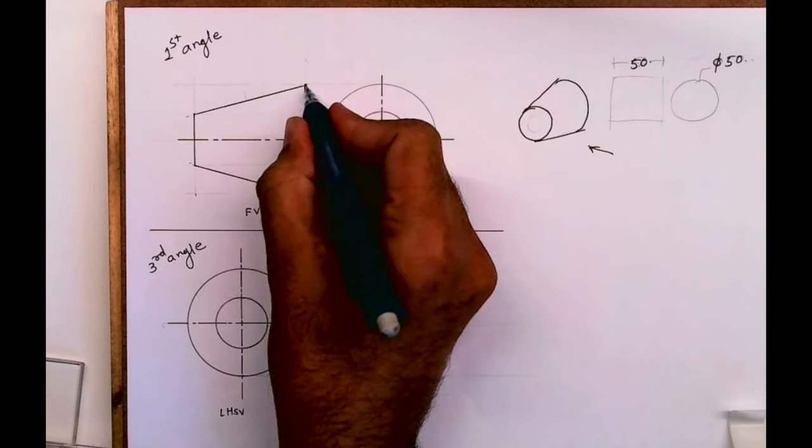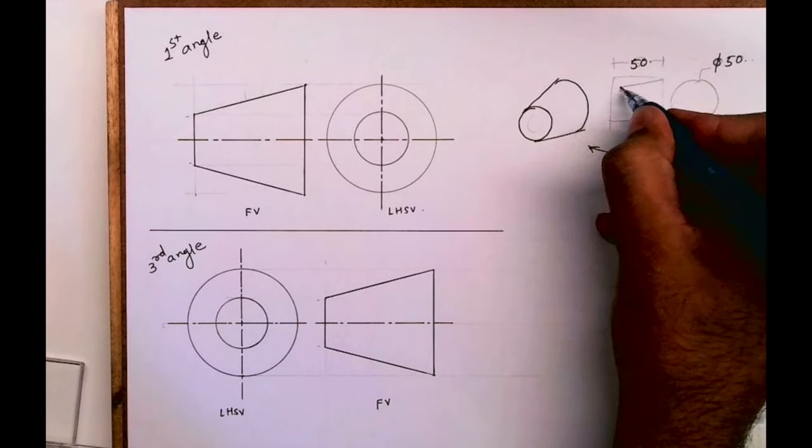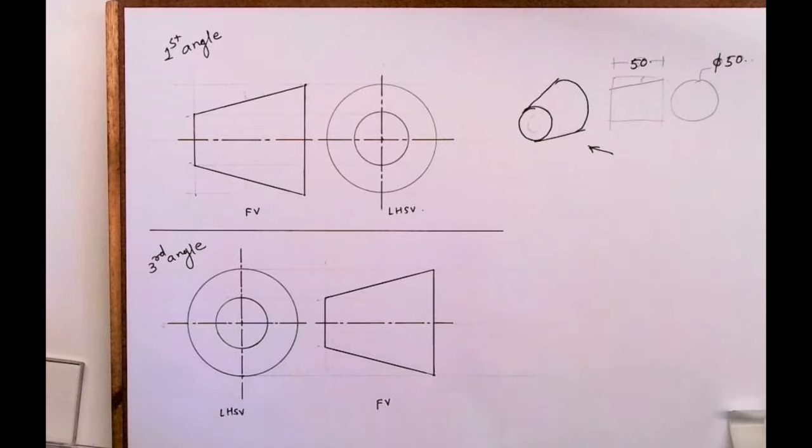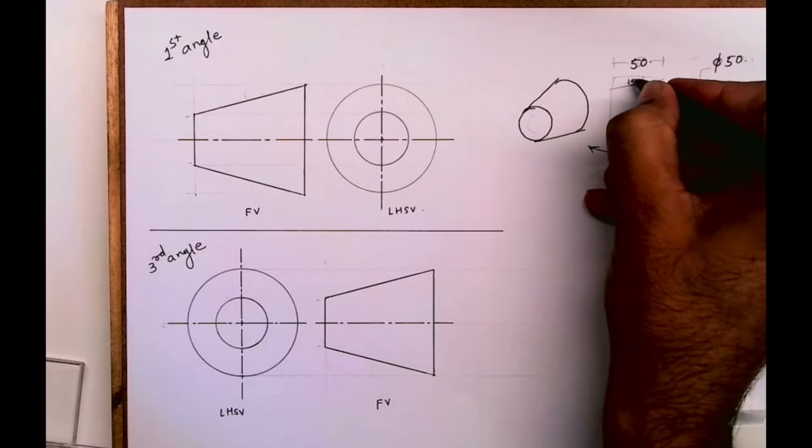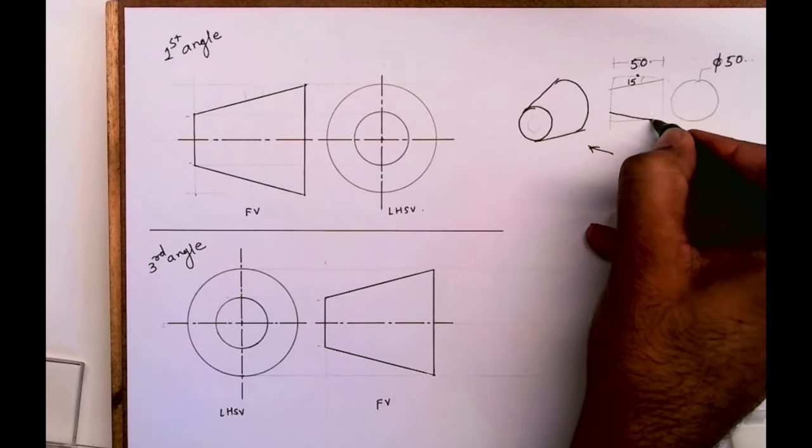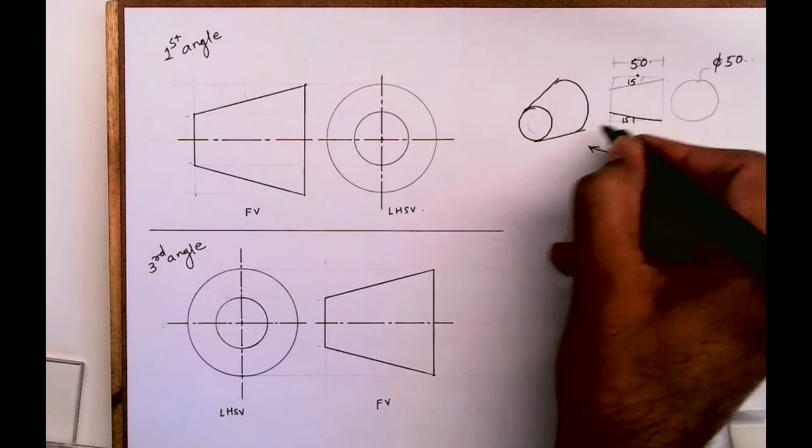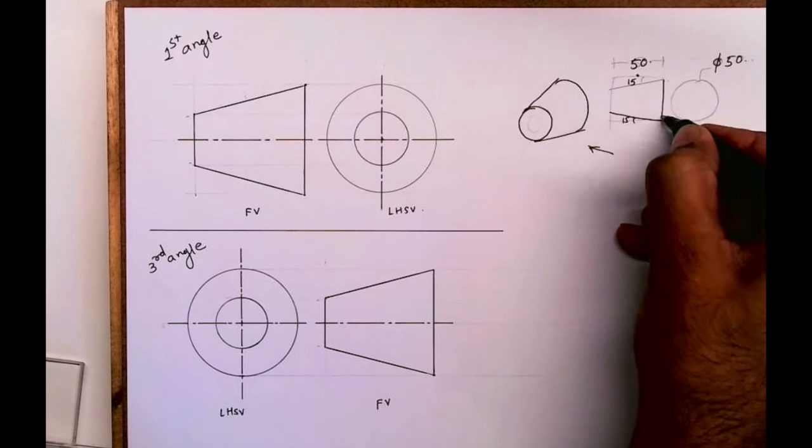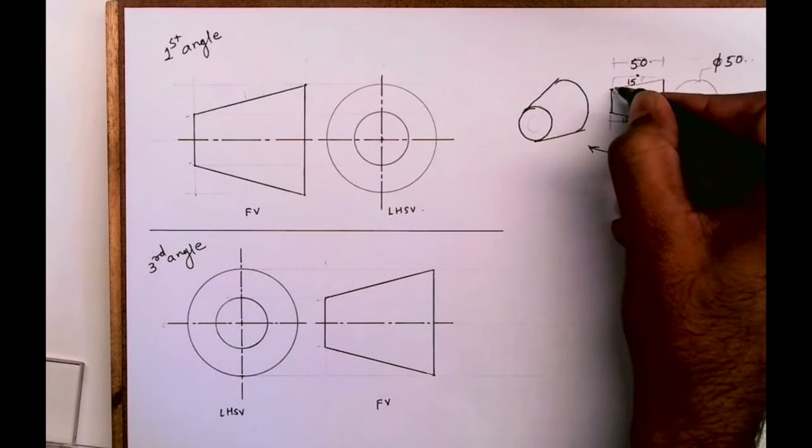Then from here you take 15 degrees. See, this is standard. This is all across the globe, this is standard dimensions. This is 15, this is also 15. So you take 15, 15 from both the sides. You'll get this diameter, inner circle diameter.